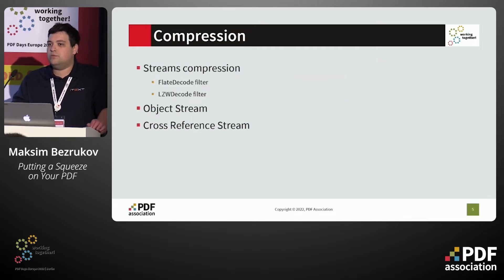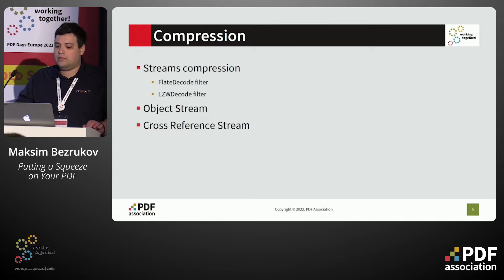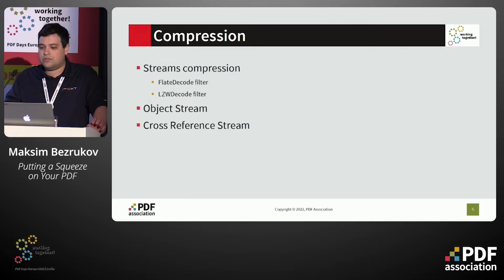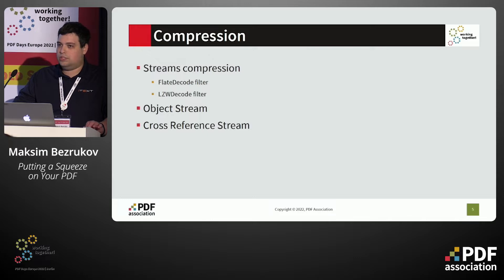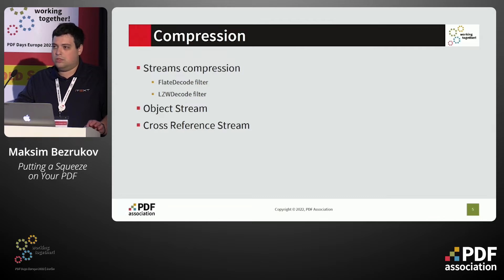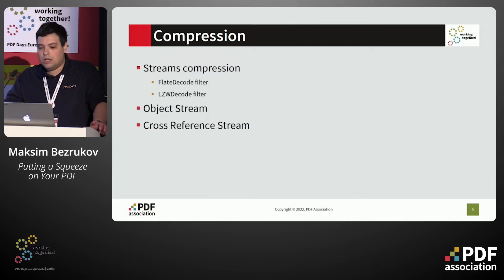Starting with the basic things provided by the PDF specification: we can use stream compression by applying FlateDecode or LZWDecode filters. Commonly it's FlateDecode, which tells us that the content stream data is compressed using the deflate algorithm — the same one used in ZIP archives. This is actually why most PDF files compress poorly when added to ZIP archives. Another two things are object streams and cross-reference streams, which allow us to put PDF structures into a PDF stream and apply stream compression over them.